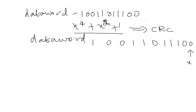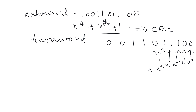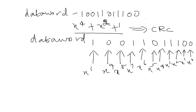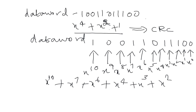Assign powers of x from x power 0 up to x power 9 to each bit position. Reading the non-zero terms, the data word in polynomial form becomes x power 9 plus x power 6 plus x power 4 plus x power 3 plus x power 1... wait — rearranging correctly: x power 9 plus x power 6 plus x power 4 plus x power 3. This is your data word in polynomial form. Now we have to divide it by the divisor.